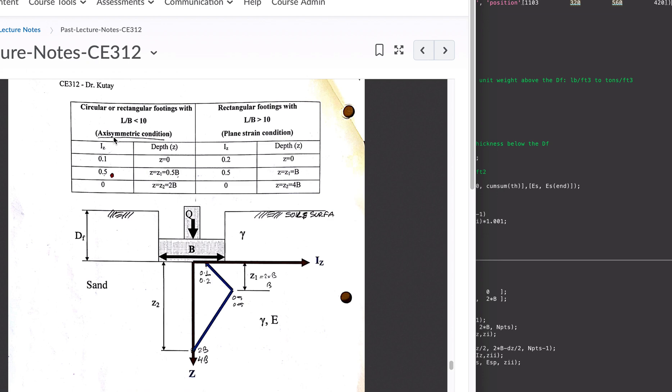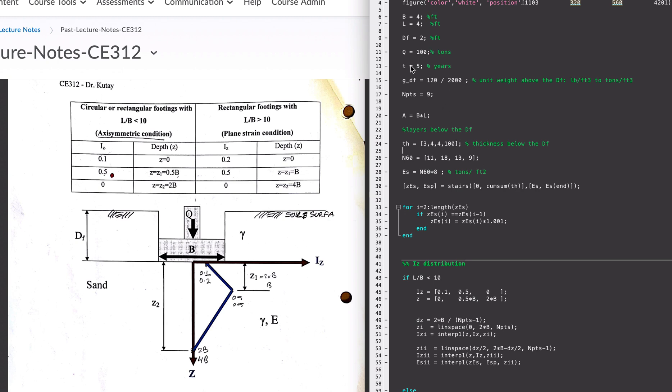To come up with this graph of IZ versus depth, for example, if your L and B are equal to each other, let's say it's a square footing. Let's call this four feet. I have this little MATLAB code that does the calculation.